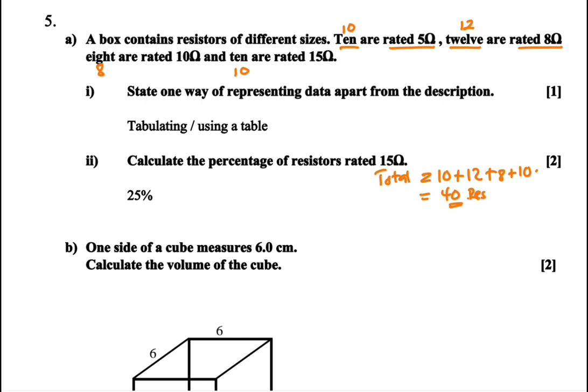So we have to find the percentage of the resistors that are rated 15 ohms. The ones rated 15 ohms are 10. So we have 10 over the total, which is 40, multiplied by the percentage, which is 100%. So then we get our answer, 25%. Is that okay?